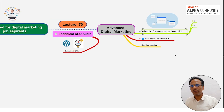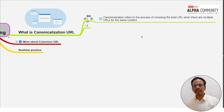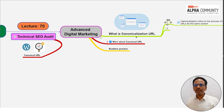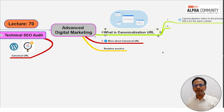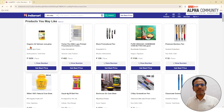In technical SEO, canonicalization refers to the process of choosing the best URL when there are multiple URLs for the same content. The canonical URL is an important concept, and we will show you in real time. This is the website we will be working with.